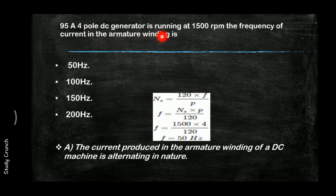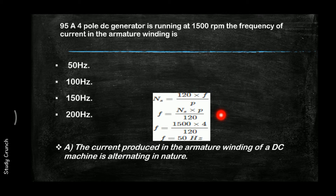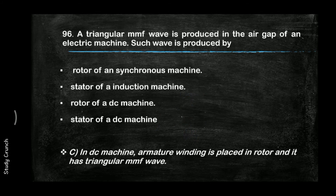A four-pole generator is running at 1500 RPM. The frequency of current in the armature winding is 50 Hz. Using n = 120f/P, we get f = (n × P) / 120 = (1500 × 4) / 120 = 50 Hz.